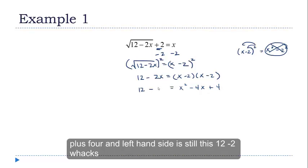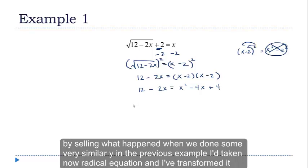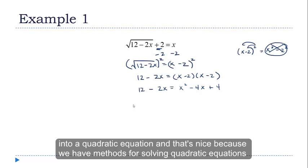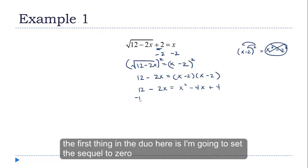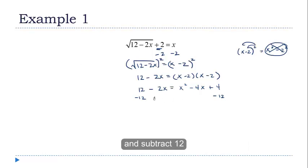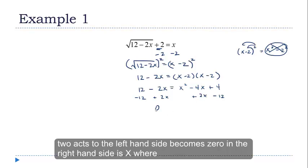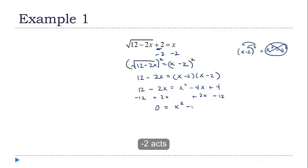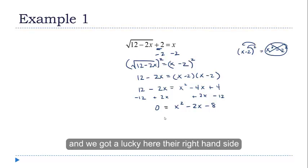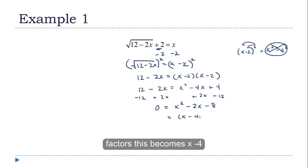The left-hand side is still 12 minus 2x. We've done something very similar to the previous example: I've taken that radical equation and transformed it into a quadratic equation, and that's nice because we have methods for solving quadratic equations. The first thing I'm going to do is set this equal to 0. I'll subtract 12 and add 2x, so the left-hand side becomes 0 and the right-hand side is x squared minus 2x minus 8. The right-hand side factors to x minus 4 times x plus 2.